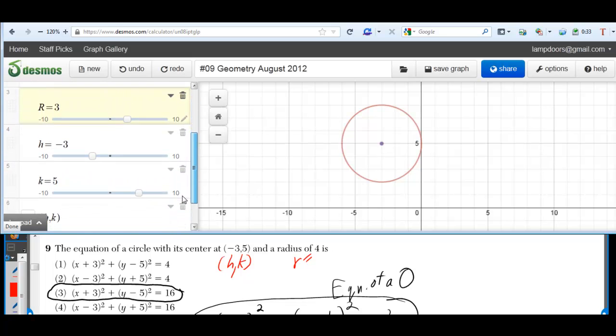What happens when you increase h? It moves the circle to the right. When you decrease it, it moves the circle to the left. When you increase k, it moves the circle up. When you decrease k, it moves the circle down.